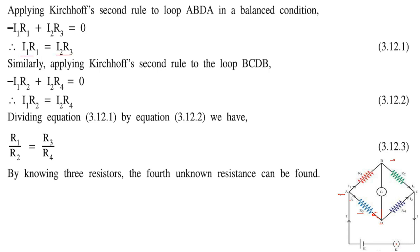Now taking the loop B, C, D, B — moving in the direction of current, there is a voltage drop due to R2, giving a minus I1·R2 term. Then moving in the opposite direction of the current gives plus I2·R4. So from this loop we get the equation I1·R2 = I2·R4.